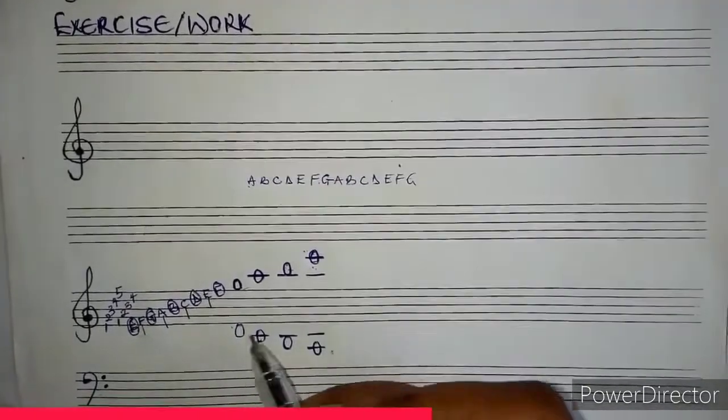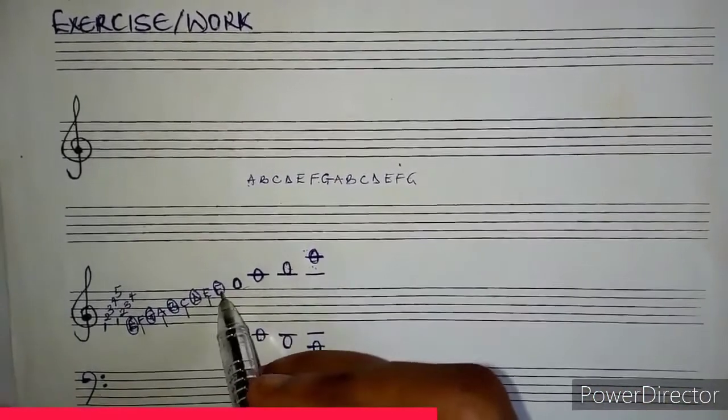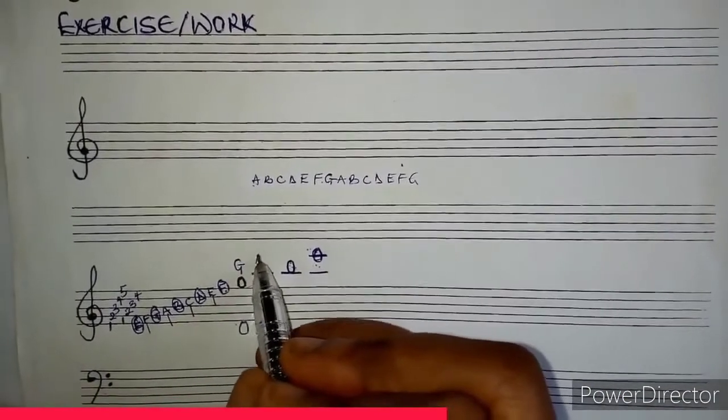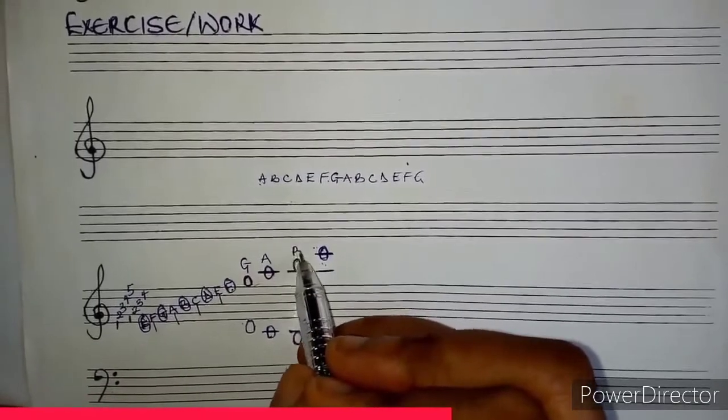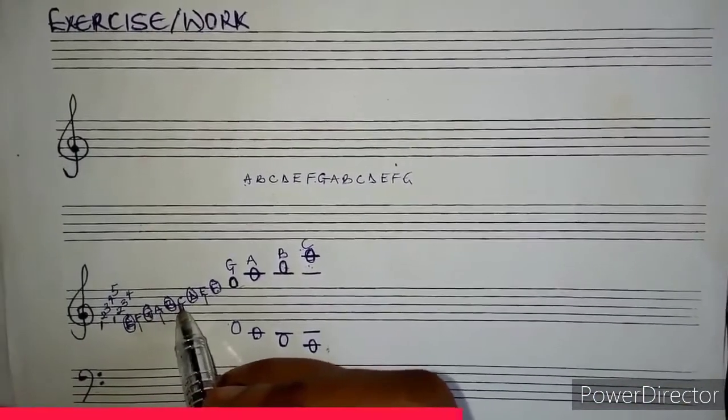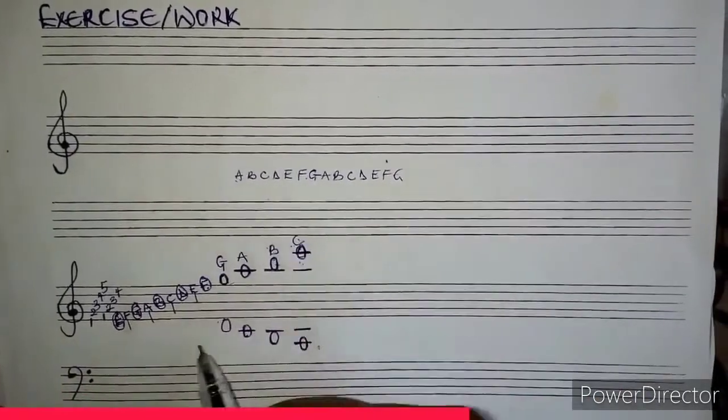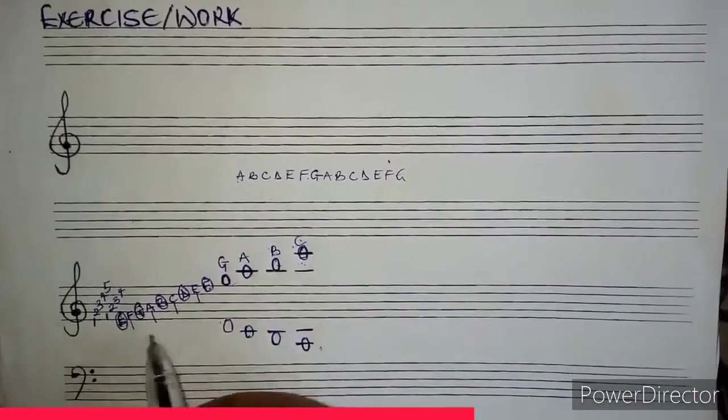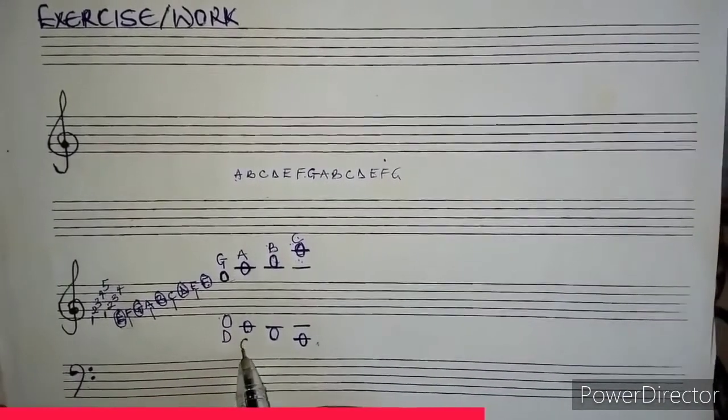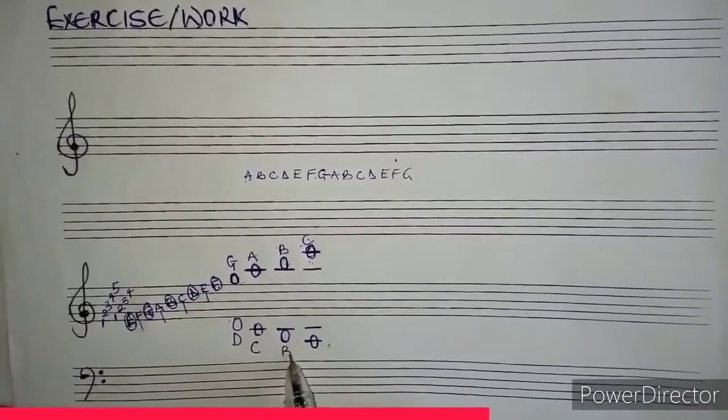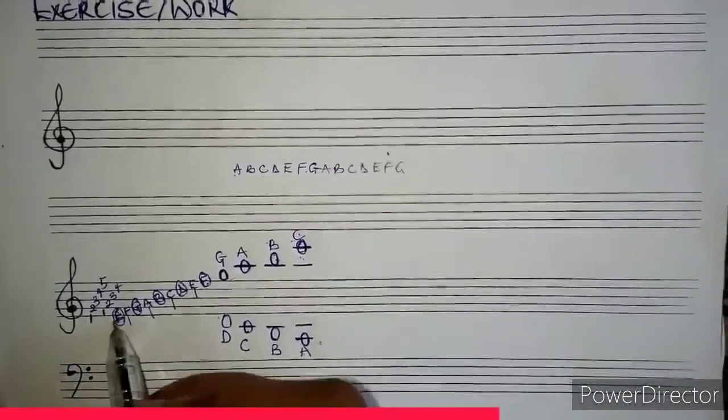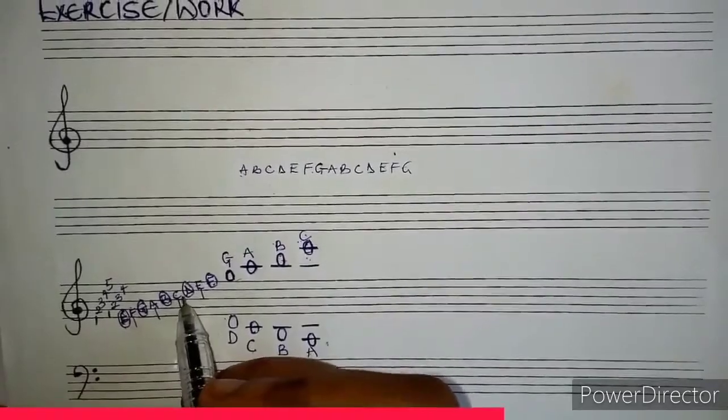Now let's letter them. If this is F, this becomes G, then A, B, C. So E-F-G-A-B-C-D-E-F-G-A-B-C. Going below, this is E, this becomes D, this is C, this is B, this is A. So let's read: A-B-C-D-E-F-G-A-B-C-D-E-F-G-A-B-C. It's just a serial number.